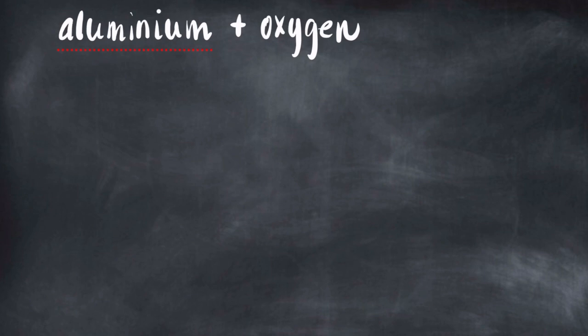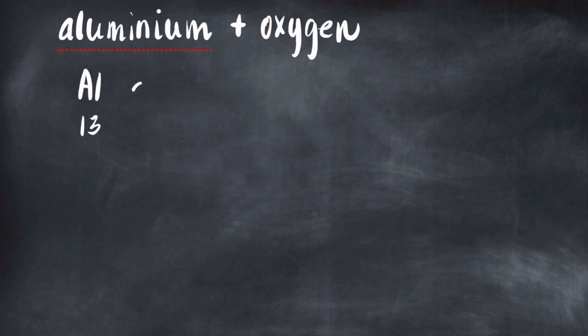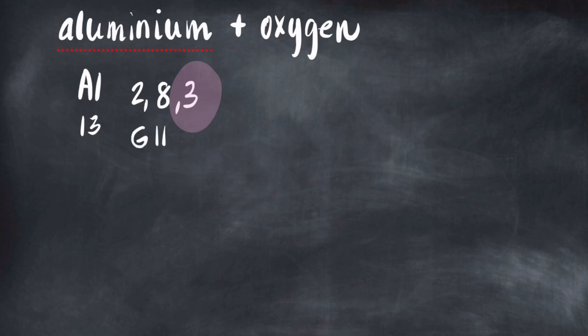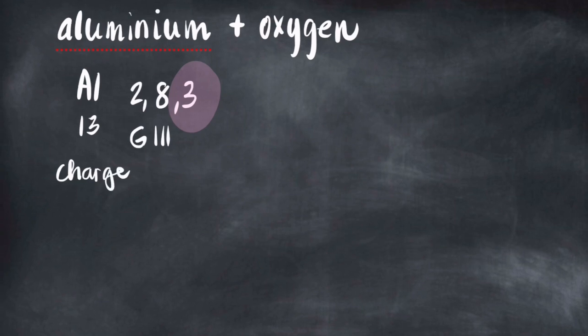This is a short tutorial on the ionic bonding CFU — how we bond aluminum and oxygen. First, we need to know what group aluminum is in. Aluminum has an atomic number of 13, so its electronic structure is 2, 8, 3. Since the valence electron count is 3, we know aluminum is in group three, and therefore it has a charge of 3+.